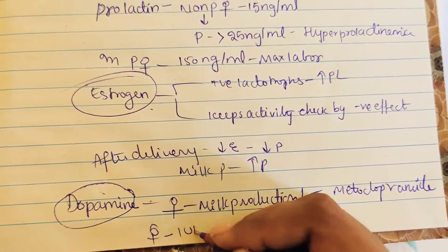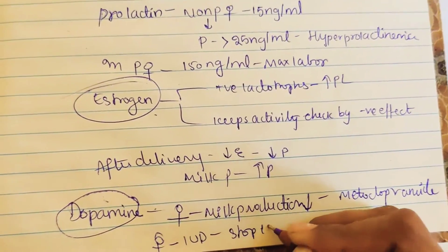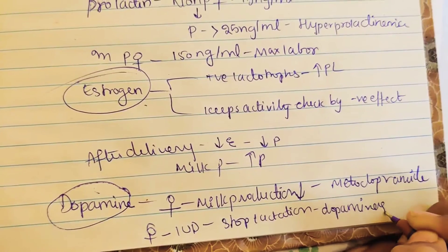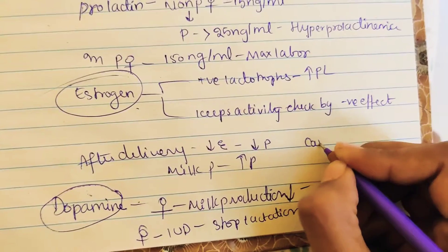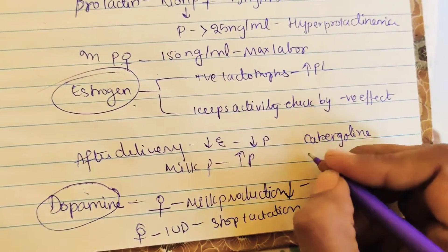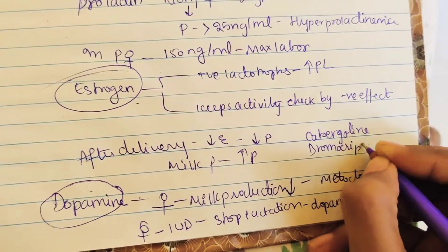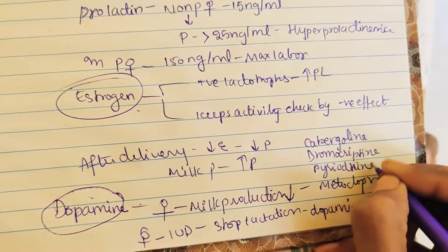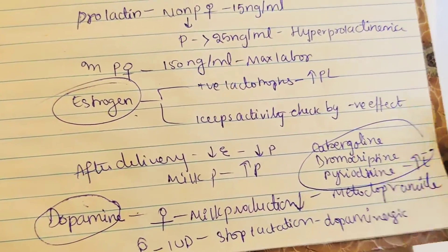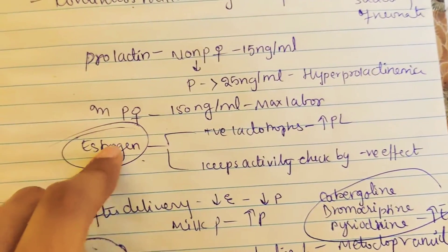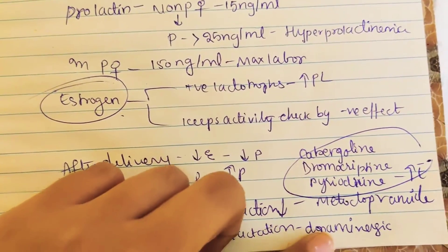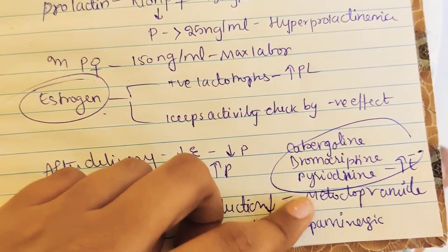In a female with IUD where we need to stop lactation, we give dopaminergic drugs like cabergoline, bromocryptine, and pyridoxine. We can also give high levels of estrogen to stop lactation, but this is not recommended because high estrogen may stimulate lactotrophs and increase prolactin. So we use cabergoline, bromocryptine, and pyridoxine.